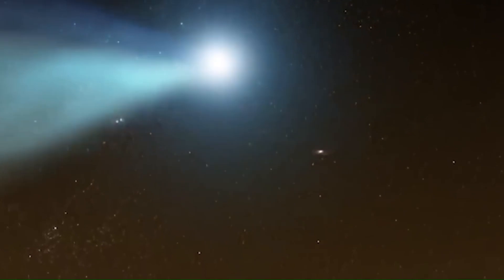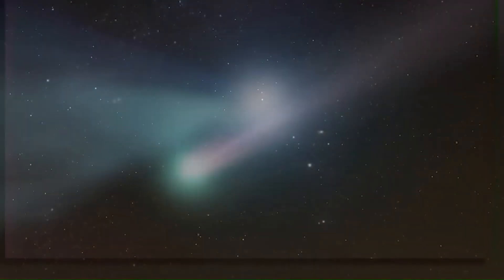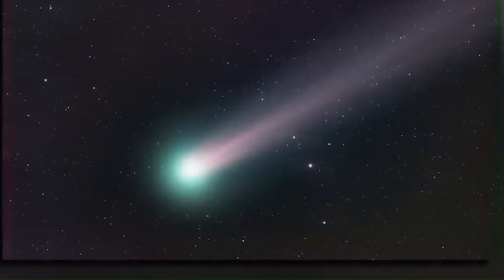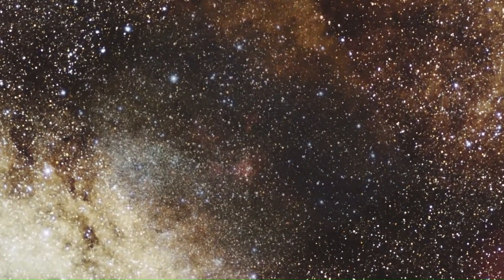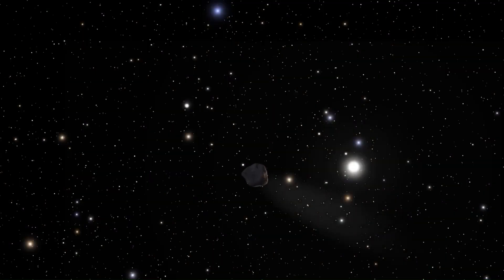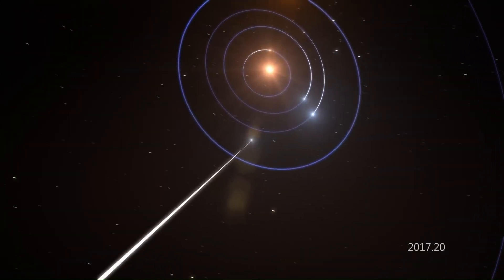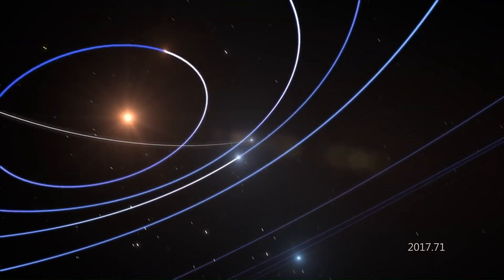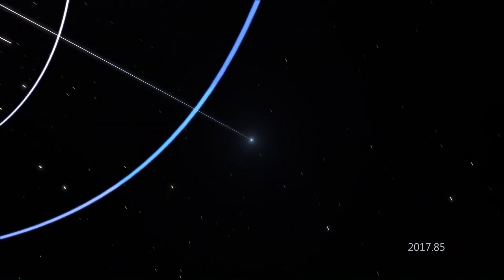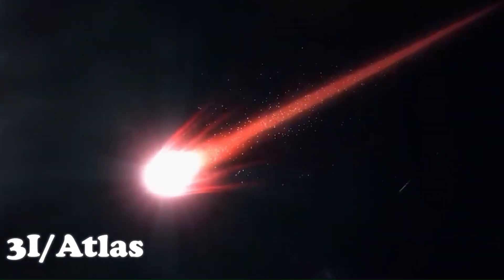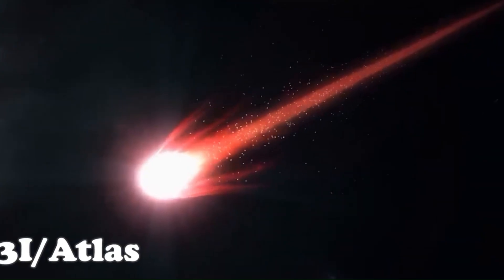3I Atlas is not an ordinary comet or asteroid. Its path through our solar system has been puzzling astronomers since its discovery. Unlike most objects that come from the outer regions of our solar system, this one appears to be from interstellar space. Questions about its origin and purpose have been growing, especially since its movement is unlike anything seen before.